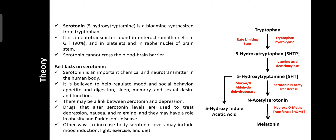Serotonin cannot cross the blood-brain barrier. But in the CNS, serotonin can be synthesized from tryptophan. Tryptophan is available from food and grains — it is an amino acid — and tryptophan can cross the blood-brain barrier, where in the presence of tryptophan hydroxylase and L-amino acid decarboxylase, it is converted into serotonin.